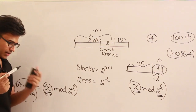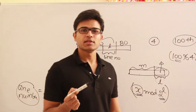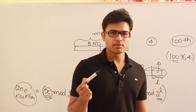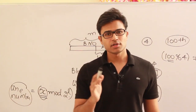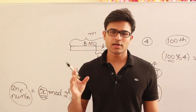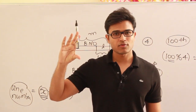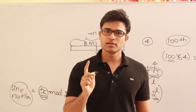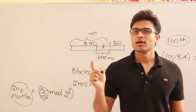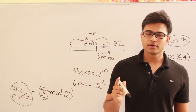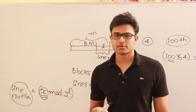Whenever any main memory block number is given, find the remainder when divided by the number of lines in the cache. That remainder is going to be the line number in which the required block is present.